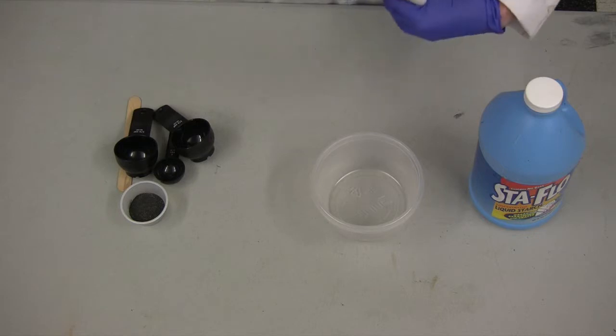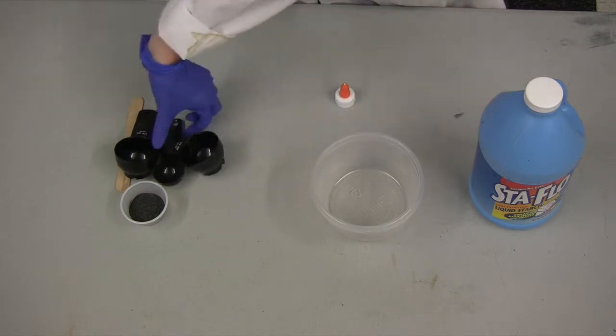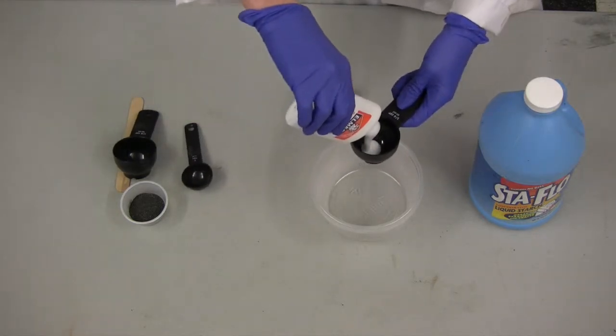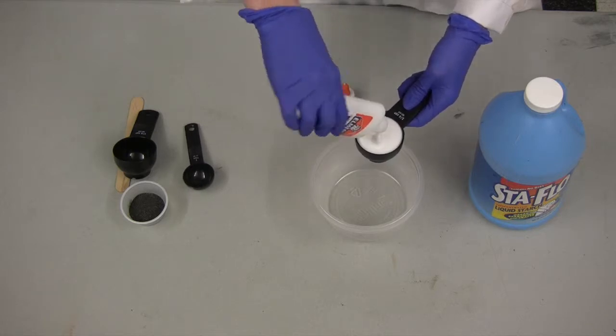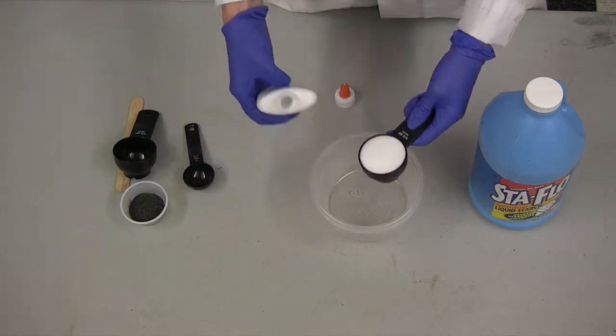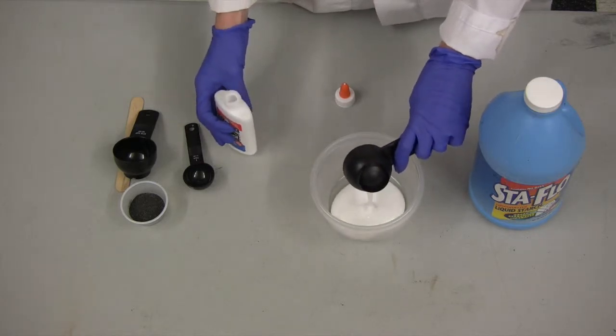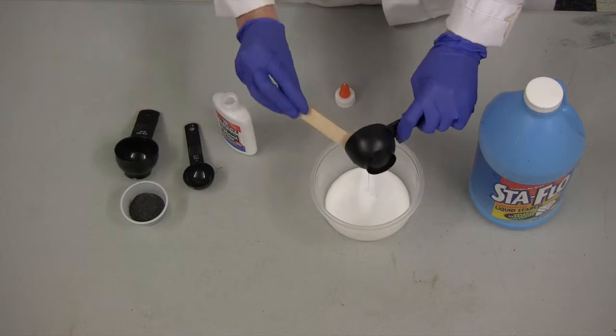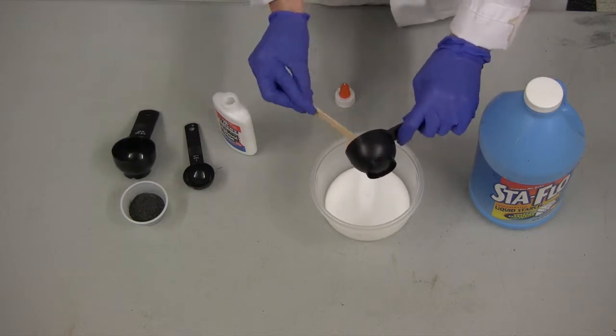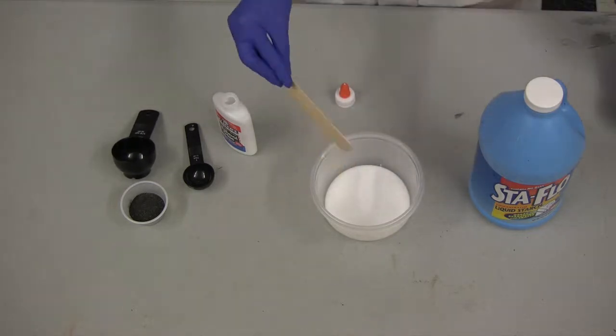We are going to start by pouring a fourth of a cup of glue into the bowl. You want to use the glue first because the iron oxide tends to suspend a little better in glue than it does in the starch.